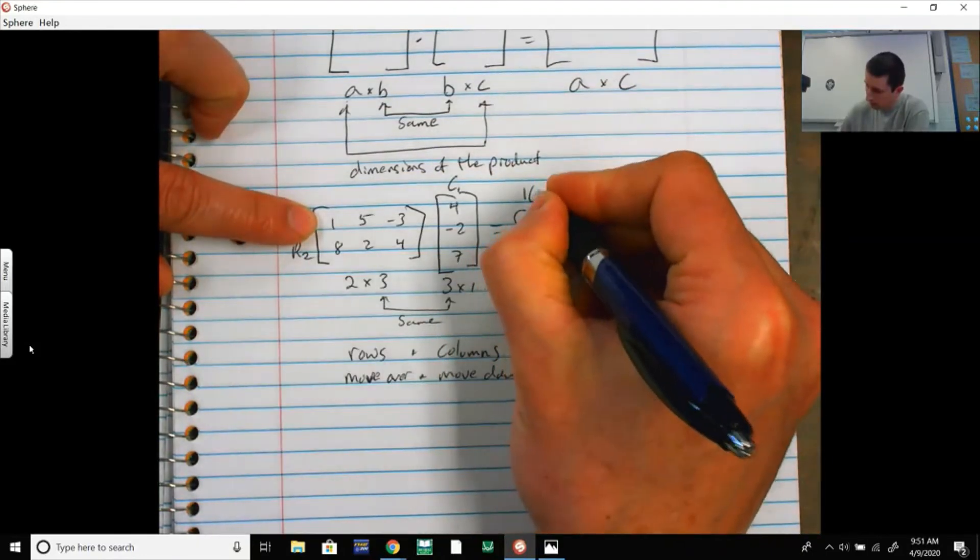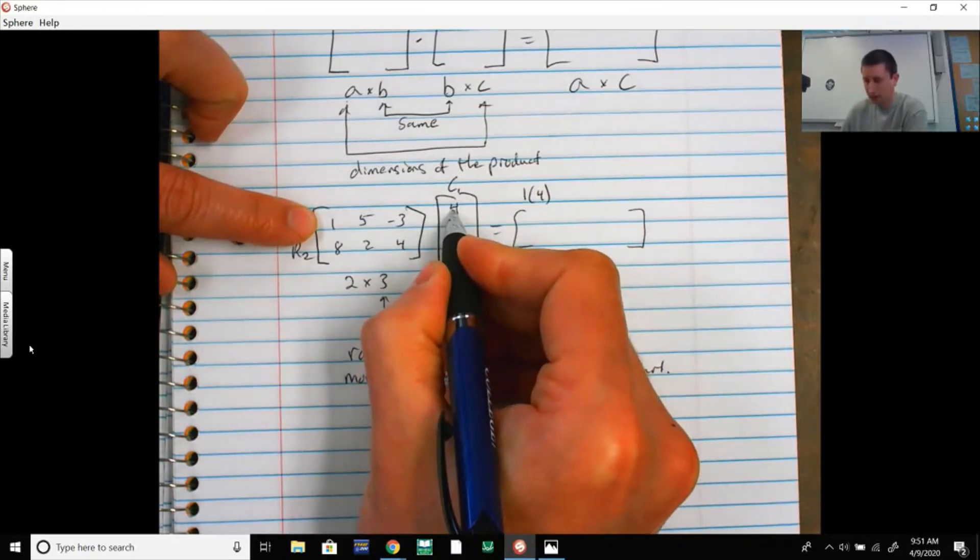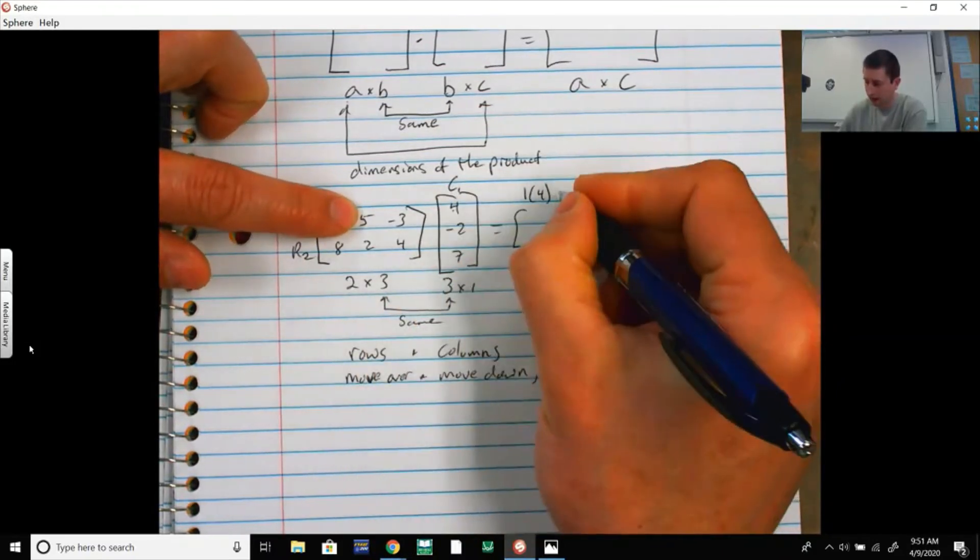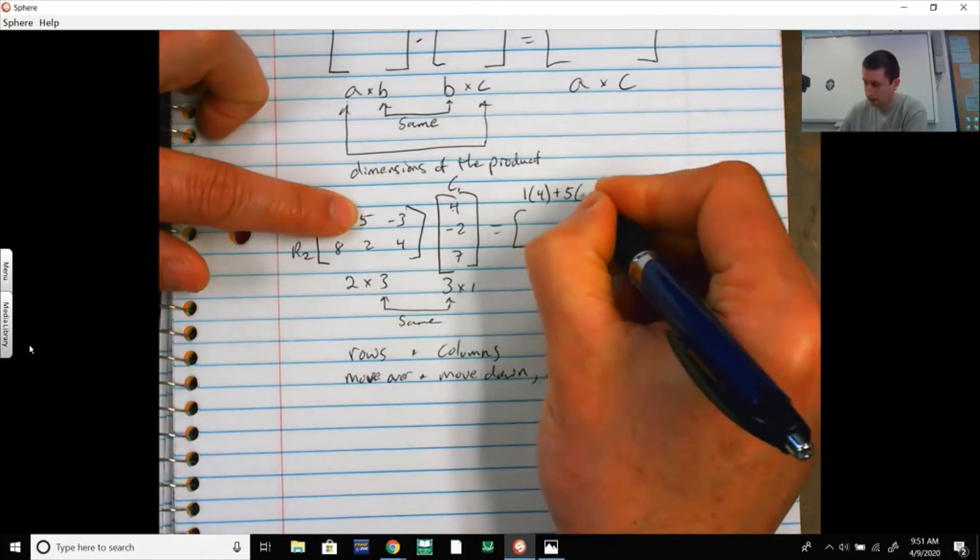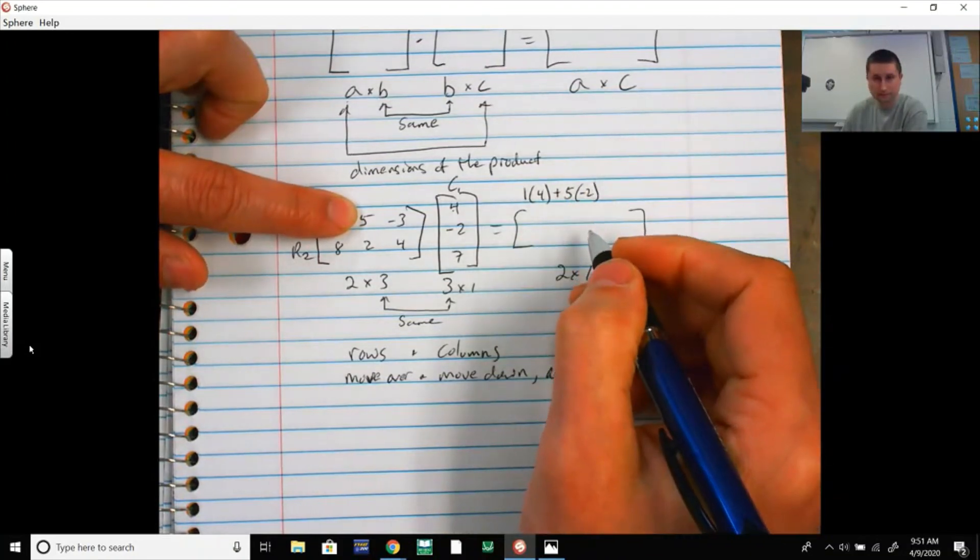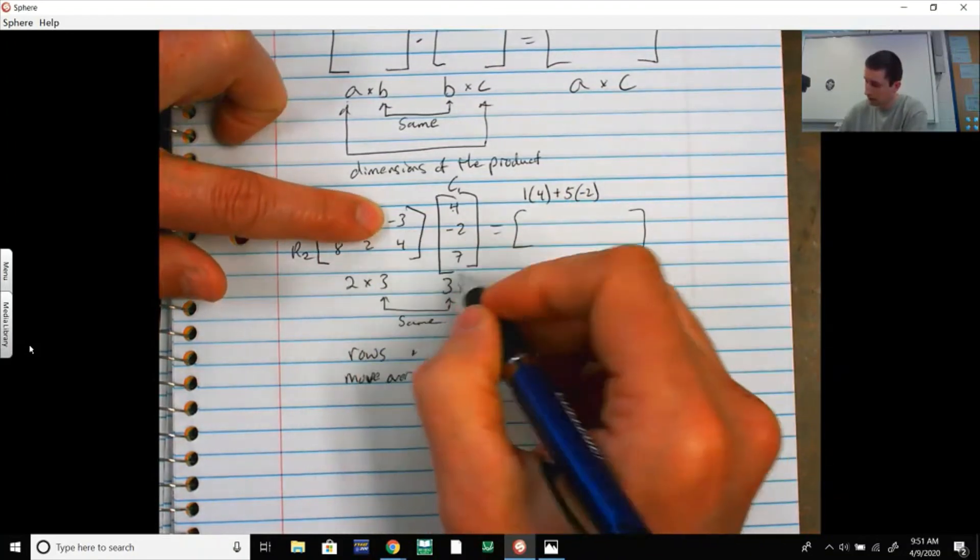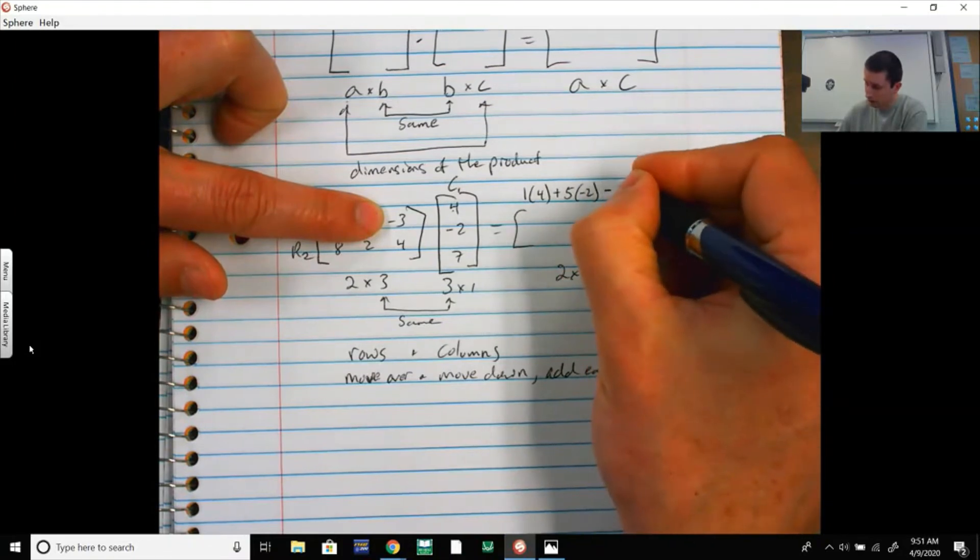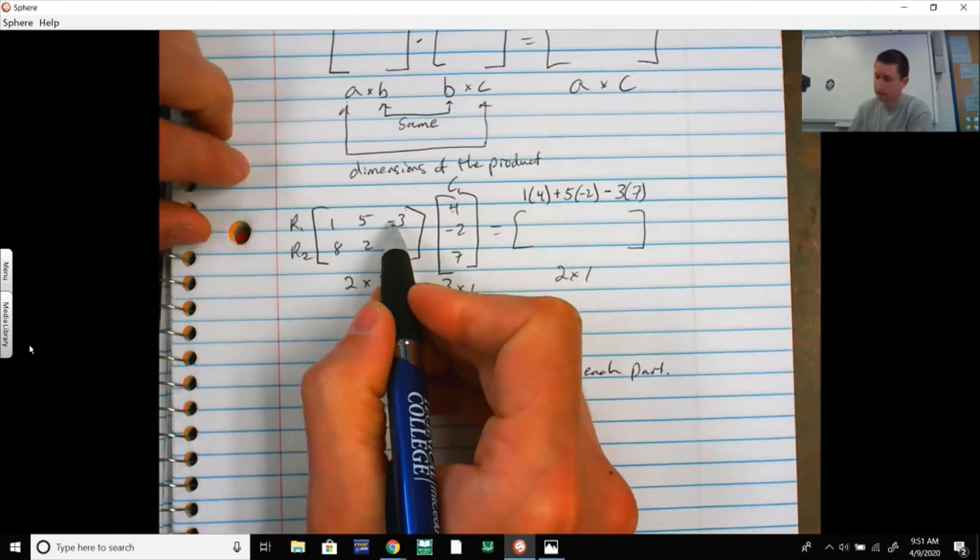1 times 4, I'm going to move over and I move down. I have to add 5 times -2. I move over, then I move down, and then I'm going to minus 3 times 7. It's a minus because it's a -3. If that was a positive, it would be a plus.